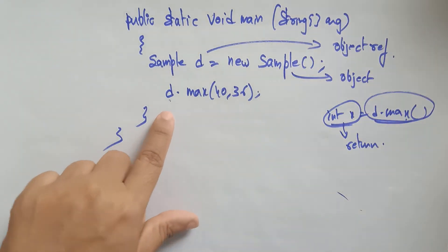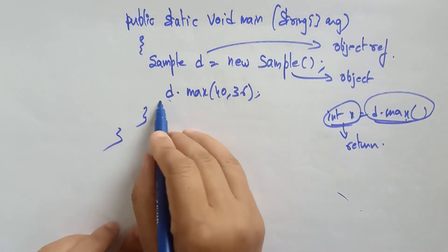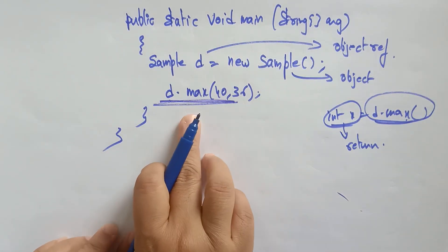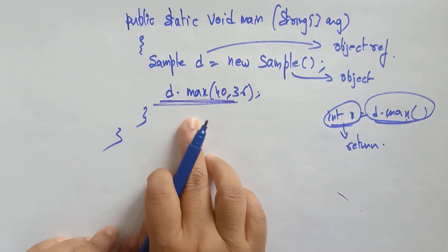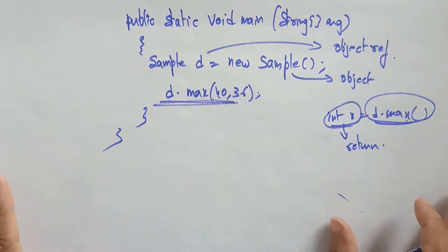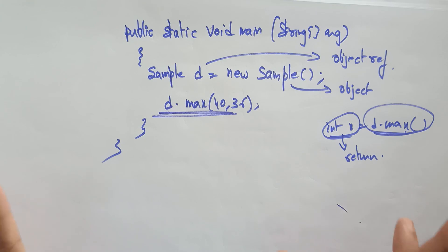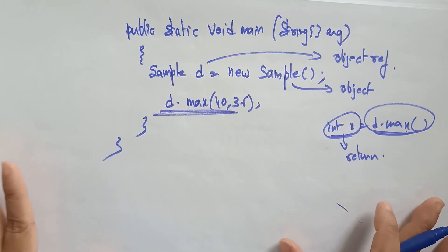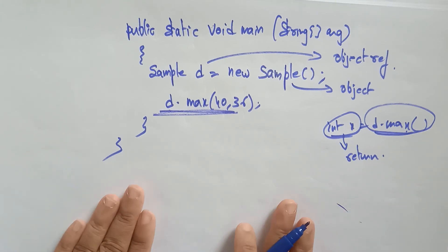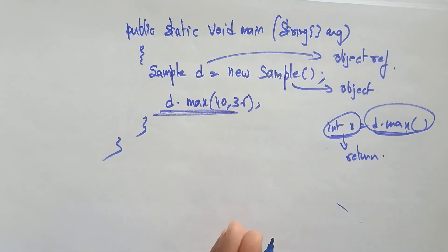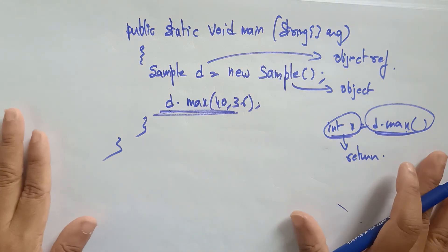There is no return type, and this is how to use a method with arguments and without return values. In the next video I'll explain by taking another program in the IDE.